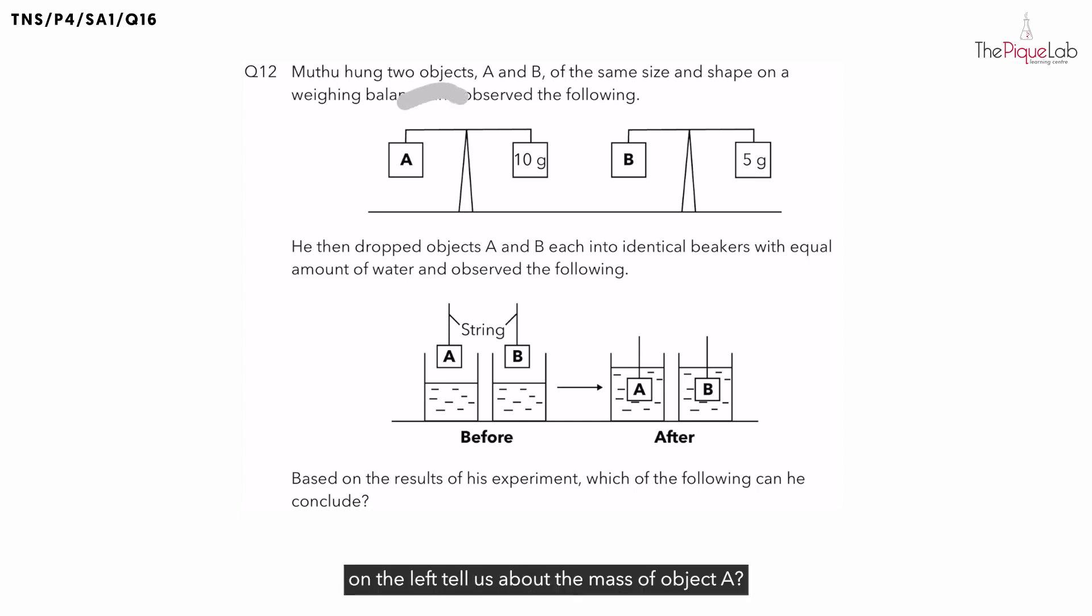What does this observation on the left tell us about the mass of object A? This means that object A and the object with 10 grams have the same mass. Therefore, object A has a mass of 10 grams. What does this diagram on the right tell us about the mass of object B? This tells us that the mass of object B is 5 grams.